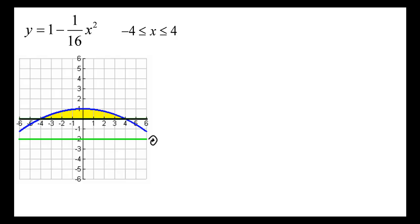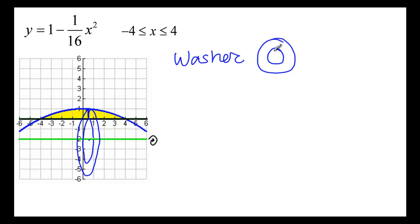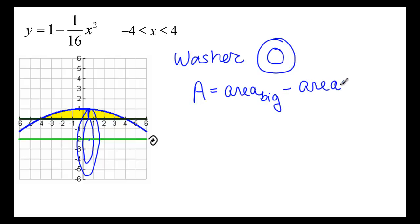Now, what would happen if we were to do the same region but we move the axis down to negative 2? Note that our rectangle no longer touches our axis, so if we revolve it around, we get a circle but with another circle cut out of the middle. This is called a washer, because it kind of looks like a washer that you'd use with nuts and bolts. We can find the volume of the solid of revolution the same way — we just need to use the area of a washer instead of the area of a circle. The area of a washer is going to be the area of the big circle minus the area of the small circle.